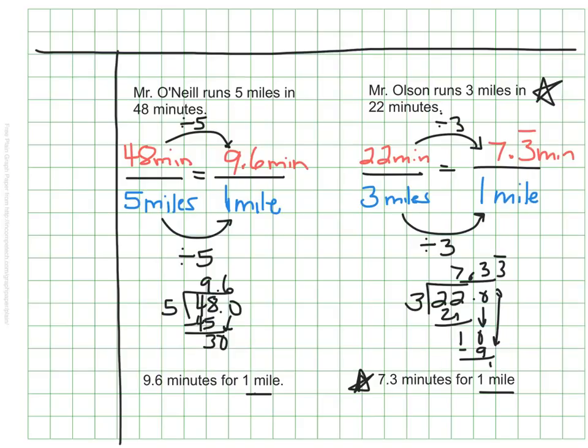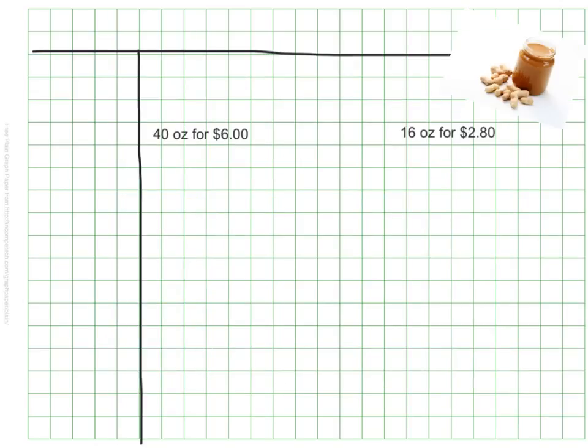Let's try one more example, this time with prices, something that I do often, which is to figure out which is the better deal or the best price. If we want to buy peanut butter, sometimes they sell us the same peanut butter in two different sizes. So we see here that we could buy 40 ounces of peanut butter for $6, or 16 ounces of the same peanut butter for $2.80. Since they are not the same size and they're not the same price, it can be hard to know right away which is the better deal. To do this, I'll see how much one ounce of peanut butter costs from each jar to know which is cheaper.